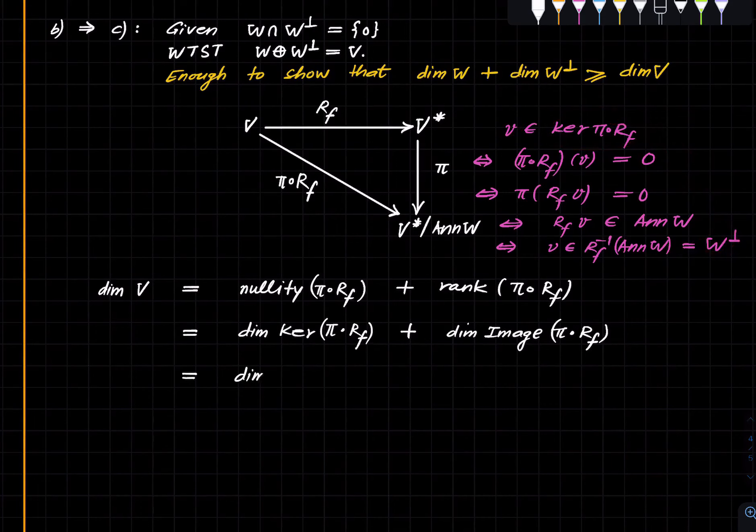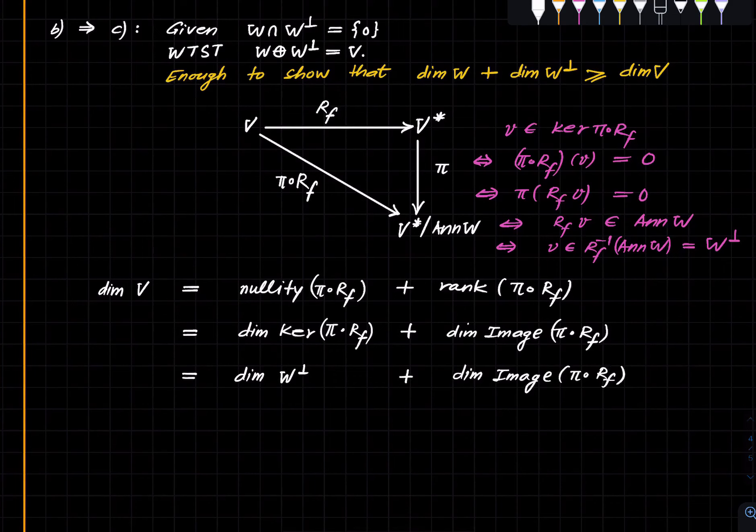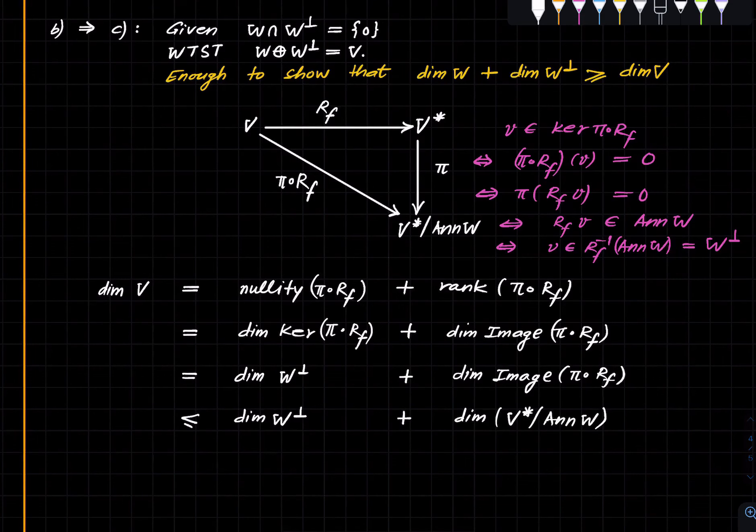This is equal to W perp, and hence what we get is dimension W perp plus dimension of the image of this composition. But now this is at most dimension W perp plus dimension of the quotient, because this is contained here, and hence we can write the full space at the cost of an inequality.